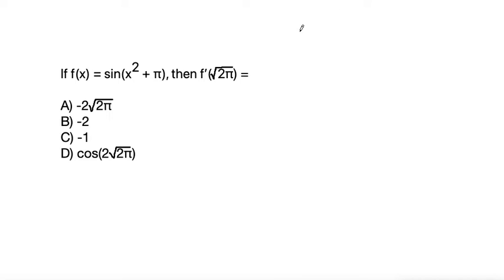Okay, so the first step is that if we have sine of x and we want to take the derivative of sine of x, the derivative of sine of x is cosine of x. So that's our first rule that we're going to use.